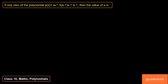The question is: if one zero of the polynomial P(x) = Ax² - 3(A-1)x - 1 is 1, then find the value of A.